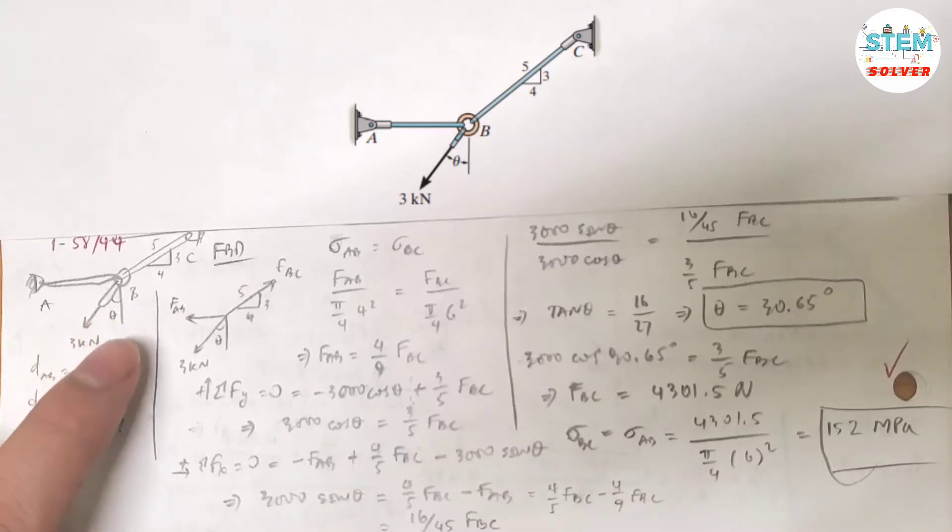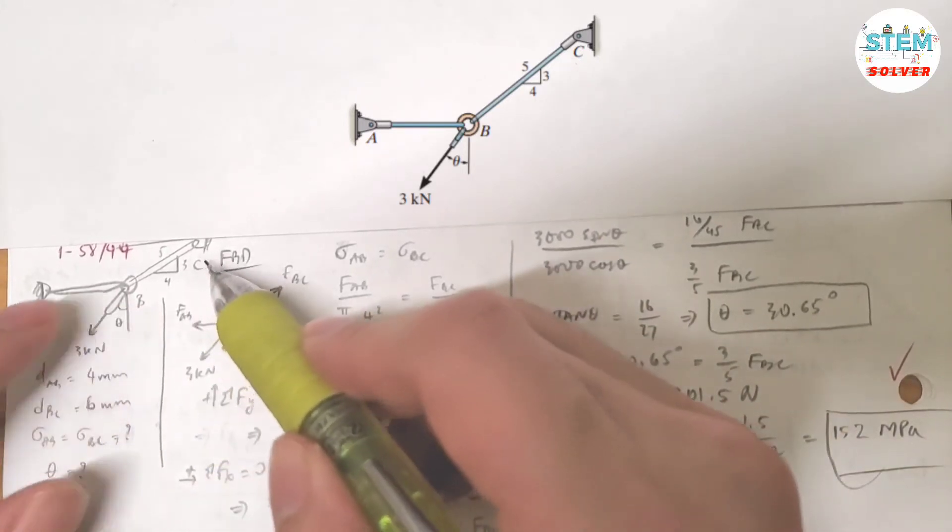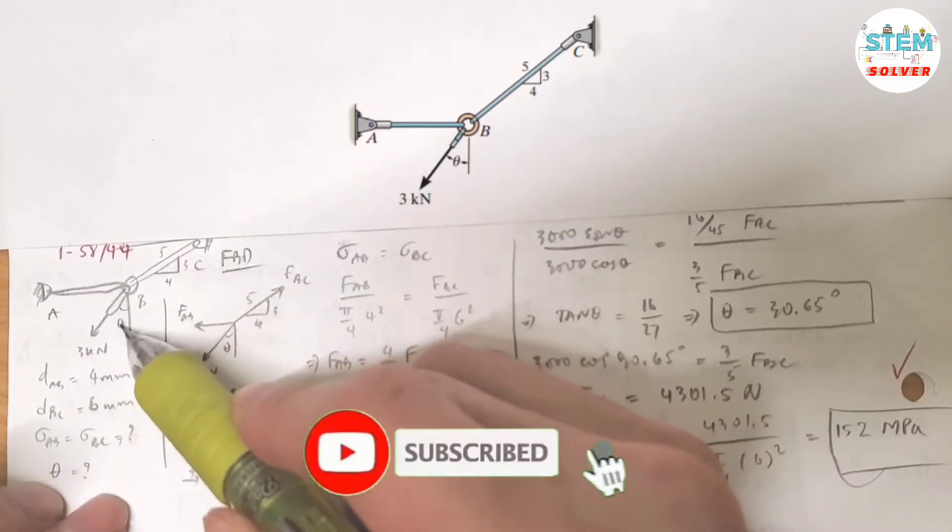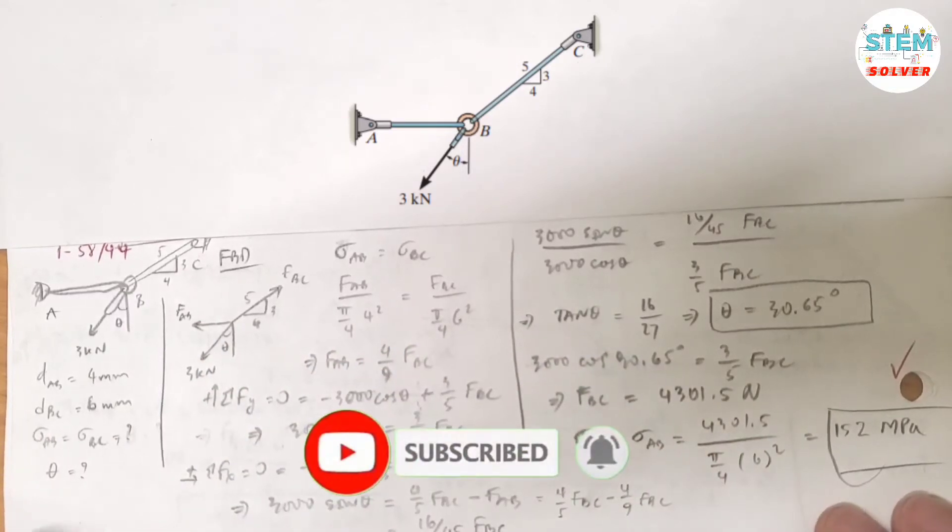So here's the figure for it. And you're told that the normal stress in rod AB is the same as the normal stress in rod BC. And you're asked to find the angle theta. So what do we do?